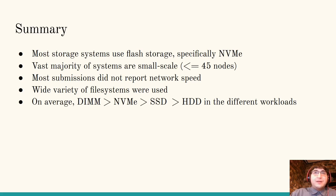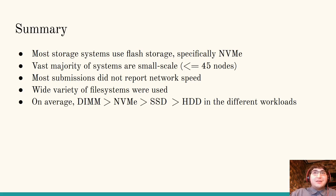In summary, most of the storage systems use flash storage, specifically NVMe. The vast majority of systems are small scale, with less than 45 nodes. Most submissions do not report network speeds, so that's not a very useful field. A wide variety of file systems were benchmarked and that field had a lot of variance. Lastly, we see a common sense trend with storage device types where DIMMs are better than NVMe, which are faster than SSDs, which are faster than hard drives, in each of the different workloads. However, this had a lot of variation as well and merits further investigation.